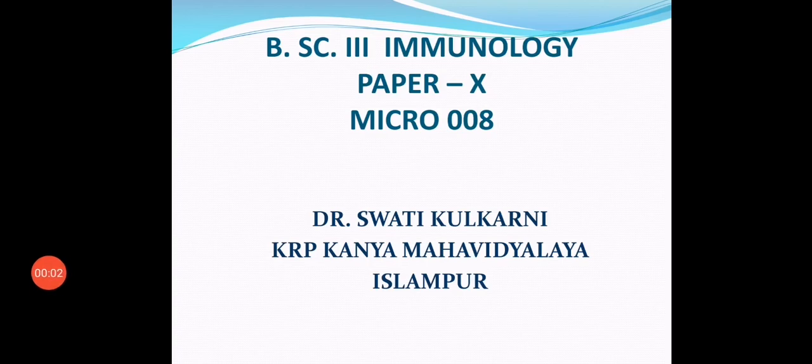Good morning everybody. In our previous lecture we discussed the organs and cells of the immune system, which comprises different types of lymphocytic and leukocytic cells including neutrophil, basophil, eosinophil, as well as the major cell types involved in immunity: T cells, B cells, dendritic cells, and NK or natural killer cells. We also discussed the thymus, which is the primary lymphoid organ of the immune system.